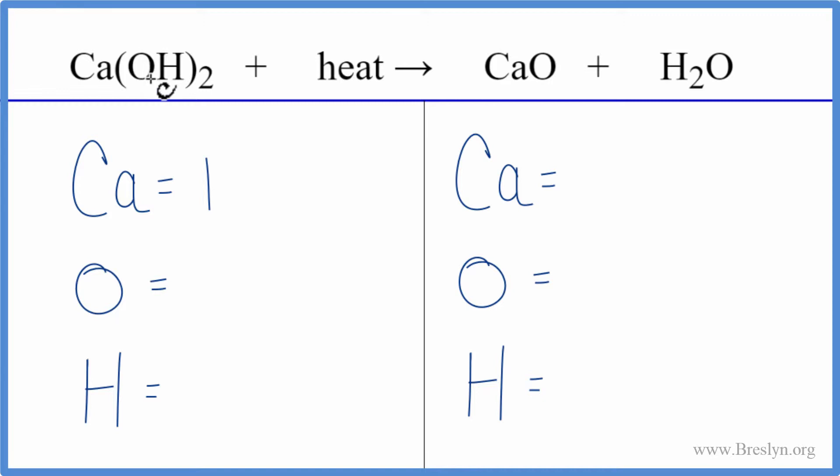We have one calcium, we have one oxygen times the two so we have two oxygens. This two applies to everything in parentheses. We have one hydrogen times the two, so we have two of those.